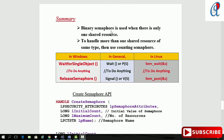Summary: binary semaphore is used when there is only one shared resource; to handle more than one shared resource of the same type, use counting semaphore. In general terms, we talk about wait (P) and signal (V) operations. In Windows, WaitForSingleObject is the wait operation and ReleaseSemaphore is used for signaling. In Linux, the same operations are sem_wait and sem_post.